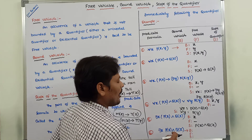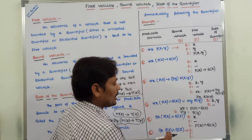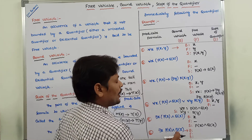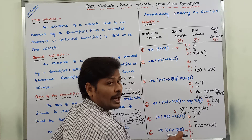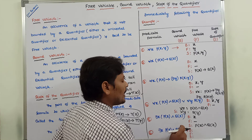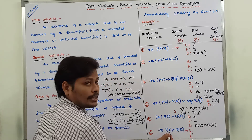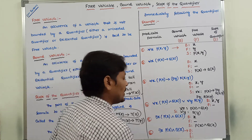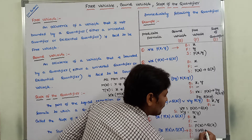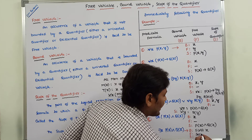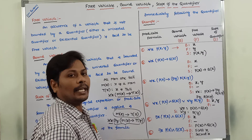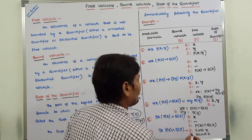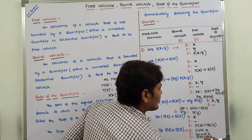The last example: there exists x, P(x) ∧ Q(x). Here P belongs to x which is bounded with the existential quantifier. Q belongs to x, but this second x is different — it is not bounded with any quantifier. So the first x is the bounded variable and the second x is the free variable. The scope of the existential quantifier is P(x) only.